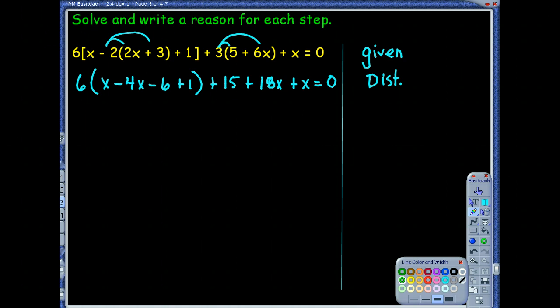Now I would like to combine those like terms before I start distributing more. Is that okay? That's fine. And you could also distribute, it's up to you. There's a couple ways we could do this. I'm going to go ahead and say I still am going to take 6 times the quantity, but now I want to call that just a negative 3x and a negative 5. And can I go ahead and while I'm at it combine the like terms on the outside? Of course you can. Because it's all combining like terms. So I'm going to go ahead and call that a 19x. So CLT.